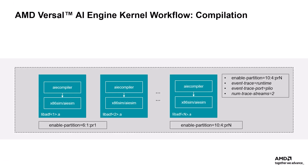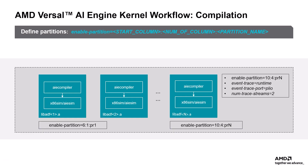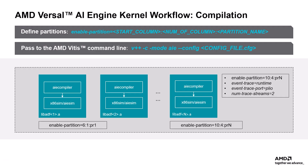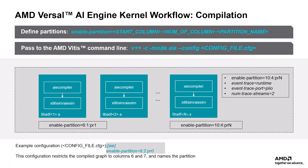Let's now look at how AI Engine kernels are compiled in the context of independent partitions. First, you define partitions using the given EnablePartition format. These partitions are passed during compilation with the V++ command line. This tells the compiler which columns of the AI Engine array to use for a specific partition. For example, EnablePartition==6:2:PR0 means the partition PR0 will occupy columns 6 and 7. Each partition is compiled separately, and the same graph can be reused across different partitions if mapped to different columns. The compiler will generate separate outputs like libadf0.a, libadf1.a, etc., one for each partition. It's crucial that partitions don't overlap; if they do, the V++ link stage will report a conflict error.